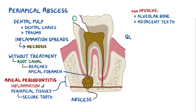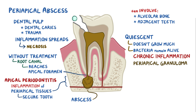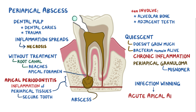Sometimes periapical abscesses become quiescent, meaning they don't grow much, but the bacteria remain alive within the abscess cavity. In that situation, it's called chronic inflammation, and a periapical granuloma forms from this walled-off area. Technically, the term granuloma is a misnomer here, since these lesions don't look like normal granulomas under a microscope. During this stalemate between the infection and the immune system, if the infection gains the upper hand, then it's called an acute apical abscess.